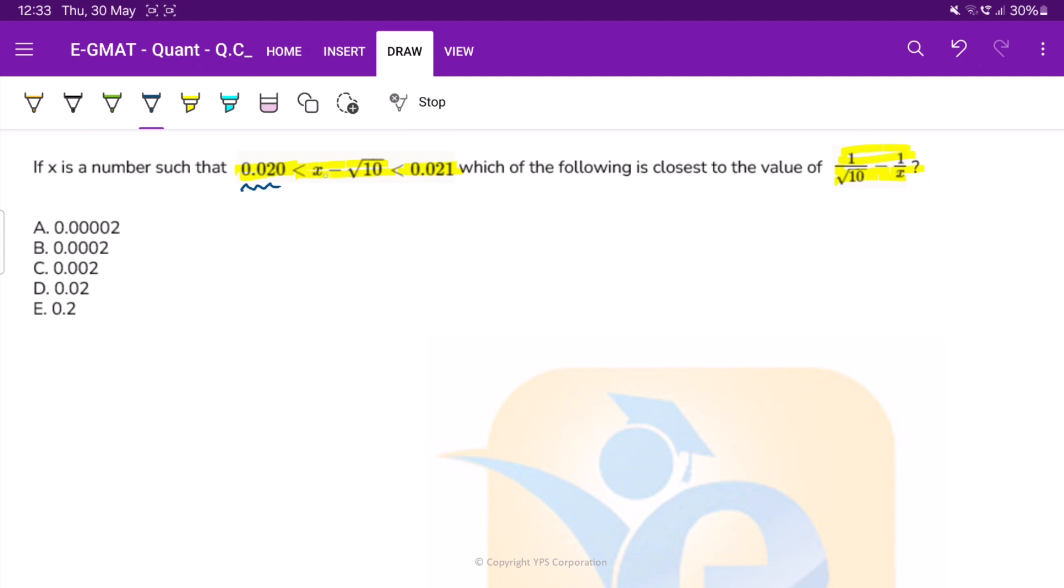Alright, so what do we have? We have a number x minus under root of 10 that is between 0.020 and 0.021. We have a different expression and we need to see which place will it lie.